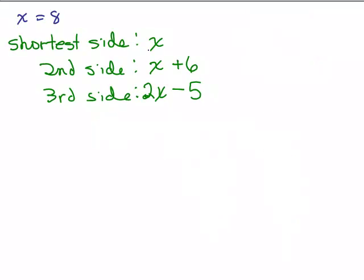So X, the short side then would be 8 feet. This is a mark you could use to mean feet. The next one, 8 plus 6 would be 14 feet. And the last one, 2X minus 5, that would be 2 times 8, 16 minus 5 is 11 feet.